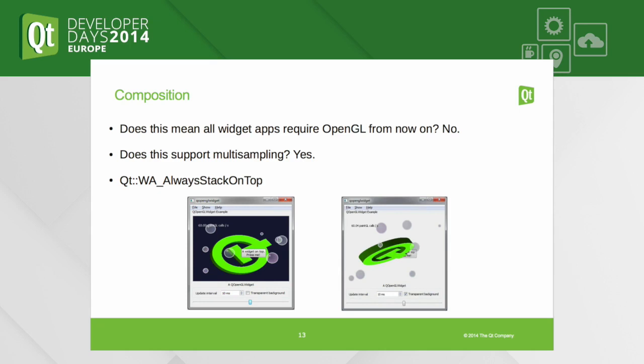When you add QOpenGL or QQuickWidget, we need to switch to compositing — but that's done fully transparently to the applications. Similarly, multi-sampling should just work, with one exception: if you have an old embedded or mobile device with only OpenGL ES 2 and it's old, there's a chance you don't have the necessary extensions and won't have multi-sampling. But for anything newer and on desktop, that won't be an issue.